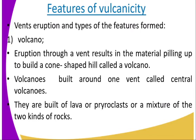Let us have a look at these features — the ones that are formed when the magma gets its way to the Earth's surface through a vent. These features are volcano features. Eruption through a vent results in material piling up to build a cone-shaped hill called a volcano. Volcanoes built around one vent are referred to as central volcanoes. They are built of lava or pyroclast materials, or a mixture of the two — involving dust and other materials that are not lava.